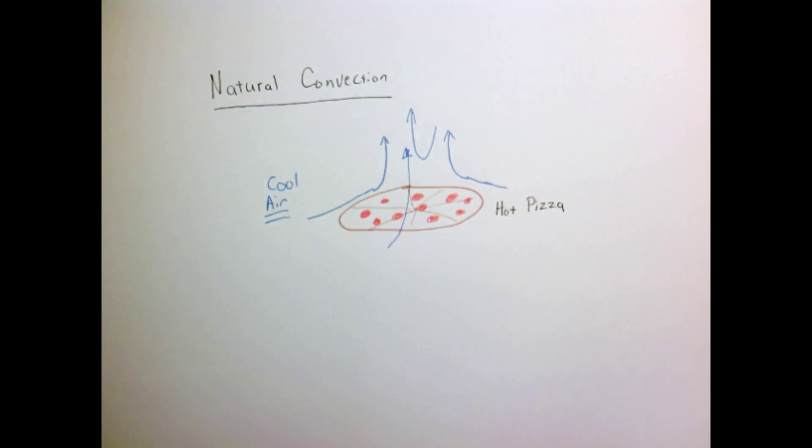This is a situation called natural convection, because it's simply the density difference—the fact that the air is lighter when it's hot and tends to float up—which is driving the fluid motion. Without gravity there would be no fluid motion.